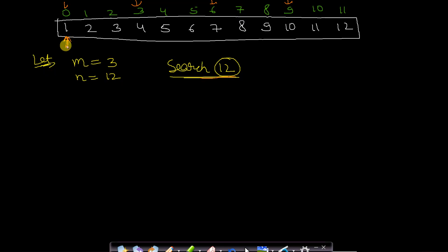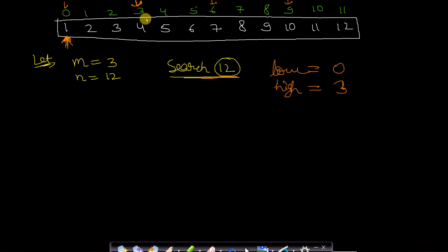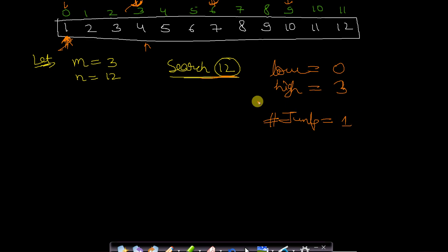Let us search for the element 12. We will keep two pointers: one at index 0 (low) and another at index 3 (high). We want to find 12. Since 12 is greater than the element at low (which is 1) as well as the element at high (which is 4), and the array is in ascending order, 12 cannot be present in this block. So we increment low to 3 and high to 6, keeping a jump counter — number of jumps is now 1. We compare 12 to both low and high again; since 12 is still greater, it cannot lie in this block either.